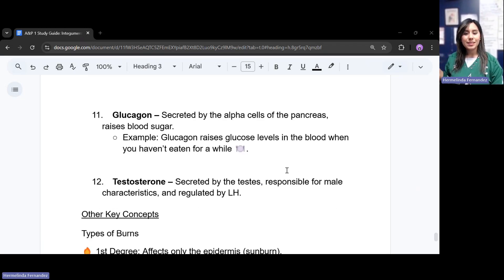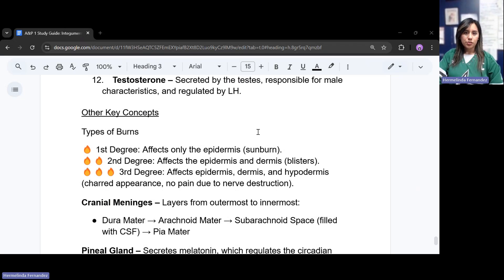Glucagon is secreted by the alpha cells of the pancreas, and it raises that blood sugar. Glucagon raises glucose levels in the blood when you haven't eaten for a while. It goes to those parts that you need because we haven't eaten. Testosterone is secreted by the testes, responsible for male characteristics, and is regulated by LH.